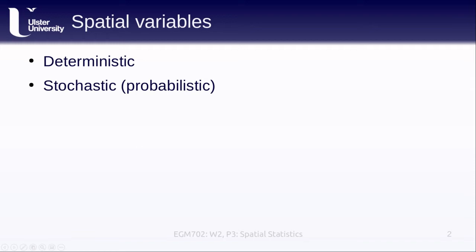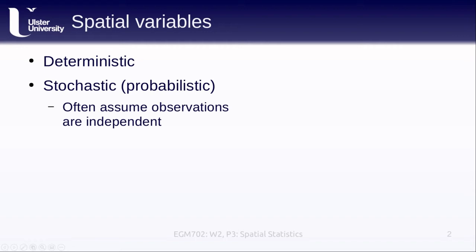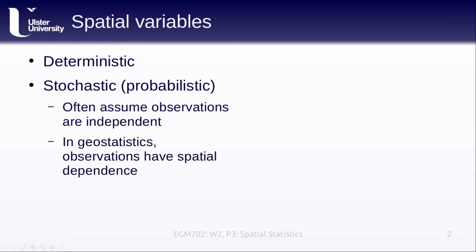We might also think about a stochastic or probabilistic variable. This is a variable that does have some random variation. Often, at least outside of the geosciences, we assume that the observations going into these probabilistic models are independent. But this assumption doesn't necessarily hold in geoscience or geostatistics, because our observations quite often have some spatial dependence.